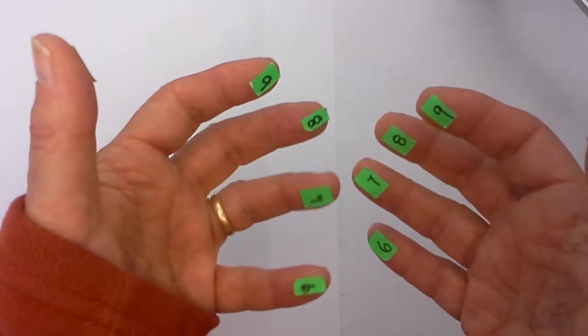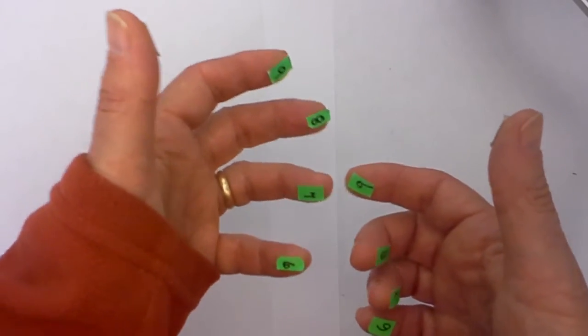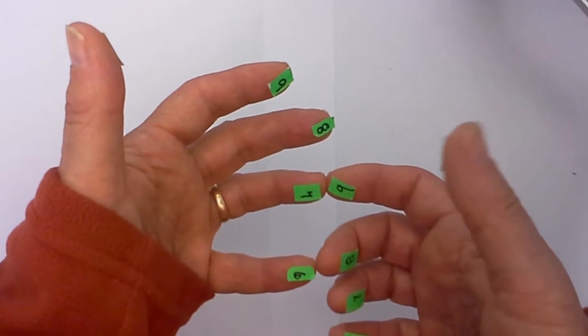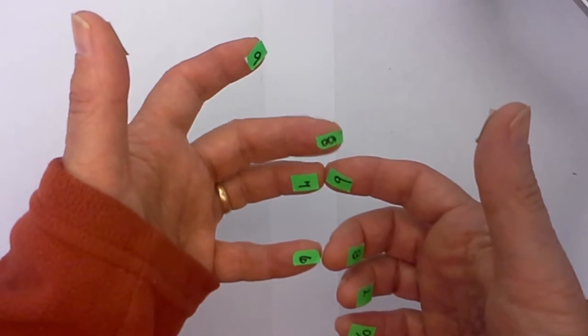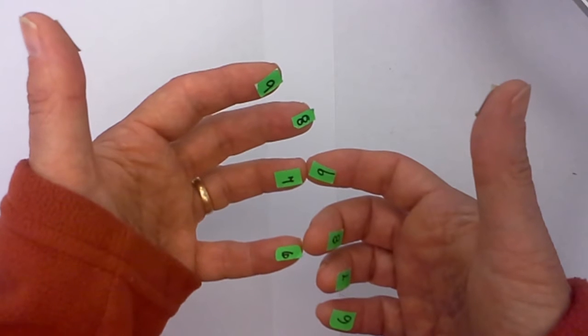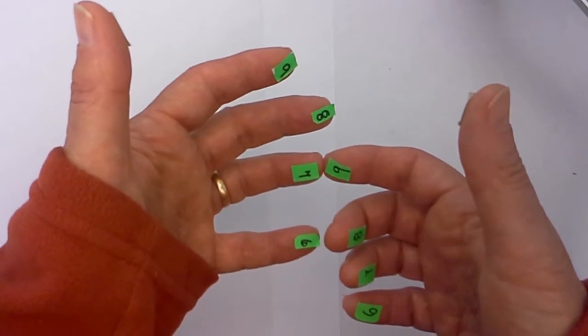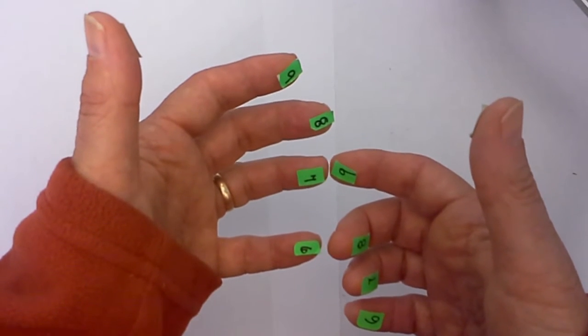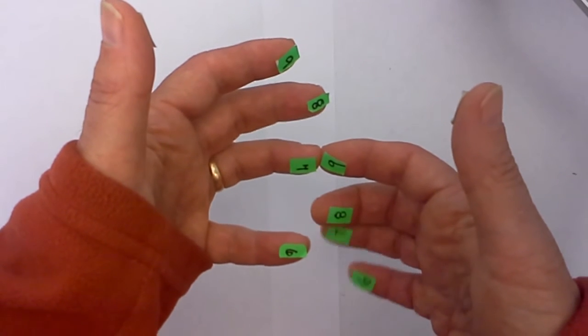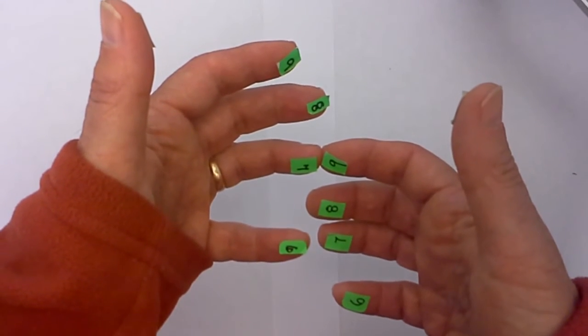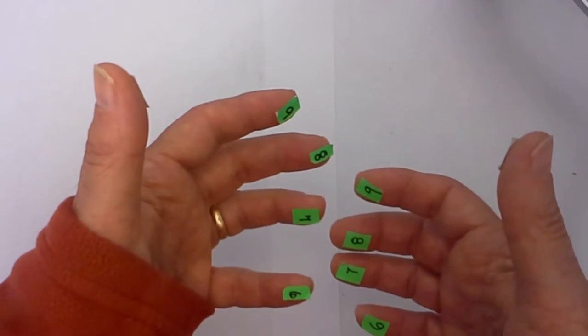Let's start with 7 times 9 because that's a tricky one. I touch the 7 on the left hand to the 9 on the right. I count the fingers above the two touching - I have 3 on this side, and I multiply left times right, so 3 times 1 is 3. Then for each finger touching or below I add 10, so that's 10, 20, 30, 40, 50, 60. So 60 plus 3 is 63, and 7 times 9 is 63.